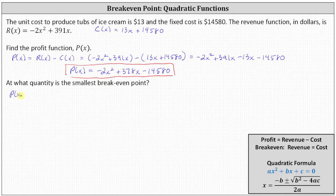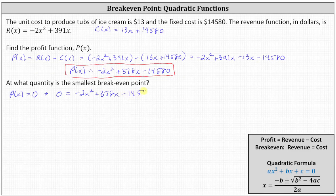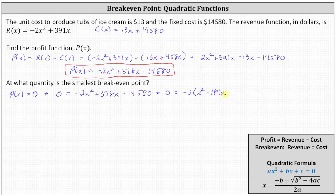If p of x, the profit function, is equal to zero, we have the breakeven point, which gives us the equation zero equals negative 2x squared plus 378x minus 14,580. Notice there is a common factor of two on the right side. Let's go ahead and factor out negative two and write the equation as zero equals negative two times the quantity x squared minus 189x plus 7290. Notice because we factored out negative two, this changed the signs of the terms inside the parentheses.